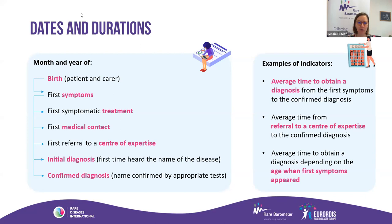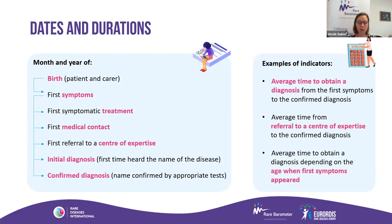Asking for specific dates will allow us to calculate many indicators for advocacy purposes. The first indicator will be the average time to obtain a diagnosis, measured from first symptoms to confirmed diagnosis. We can also calculate average time to access a confirmed diagnosis from referral to a center of expertise, or look at average time to diagnosis depending on the age of the patient when first symptoms appeared — providing a lot of information for the whole rare disease population, specific diseases, or specific countries.